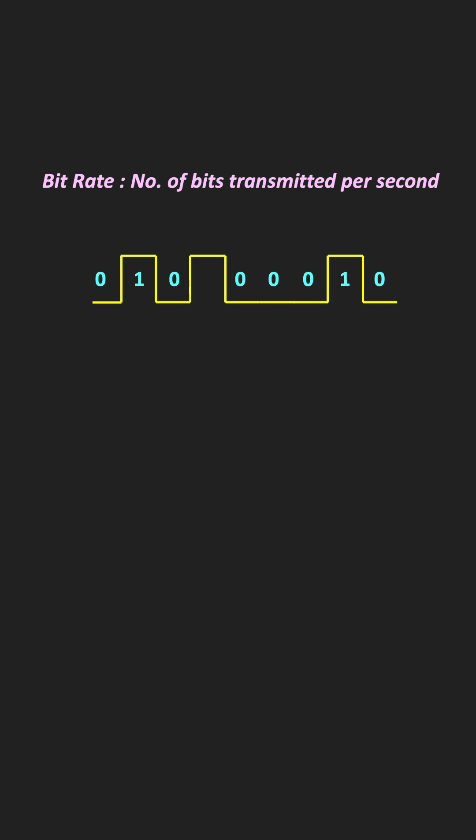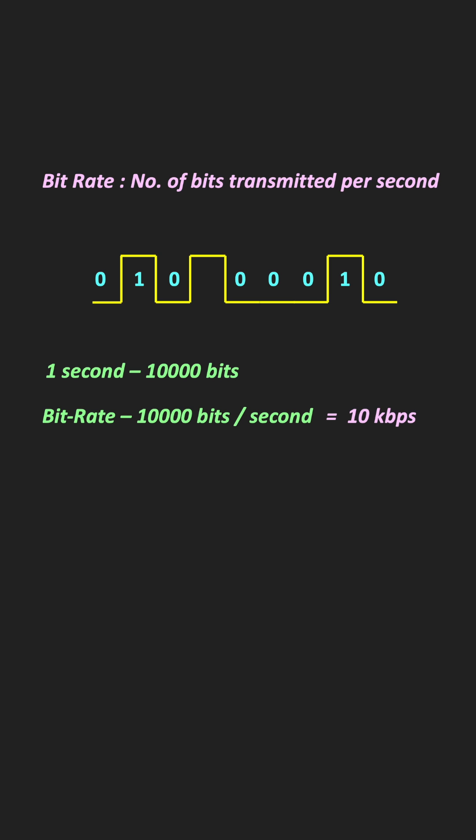The bit rate defines the number of bits transmitted per second between two communication devices. For example, in one second, if 10,000 bits are transmitted between two devices, then it means that the bit rate is equal to 10,000 bits per second, or in other words, that is equal to 10 kilobits per second.